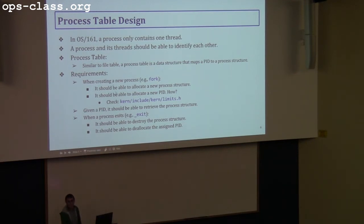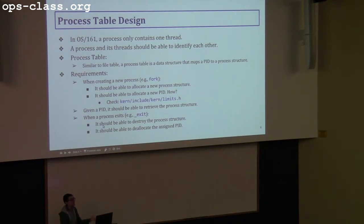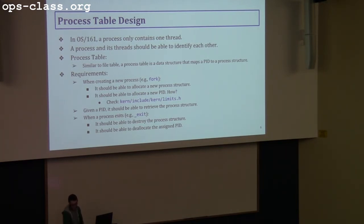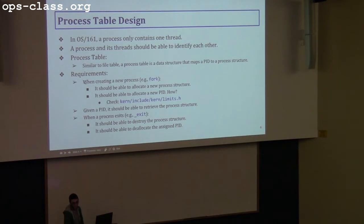So that's for allocating a new PID. The other thing the process table should do is, given a PID, retrieve the process structure. And when a process exits, it should be able to destroy the process structure. Depending on whether it's a linked list or an array, you need to destroy the process structure accordingly. You don't need to recycle the PID — it should only be deallocated. So if you're given a PID that belonged to an exited process, it should tell you that's an invalid PID. These are basically the requirements for process table design.